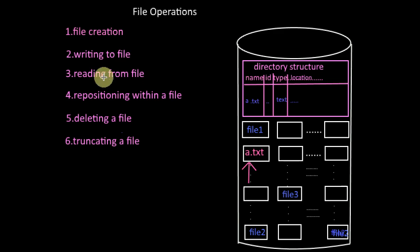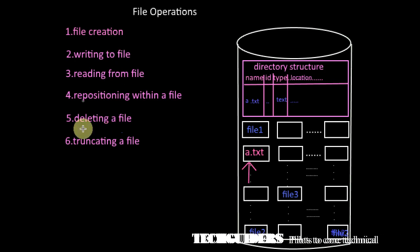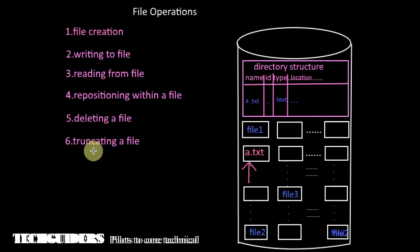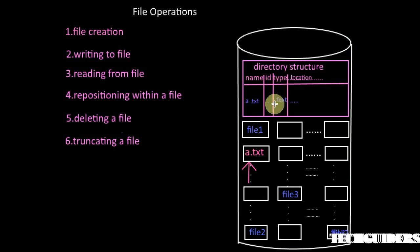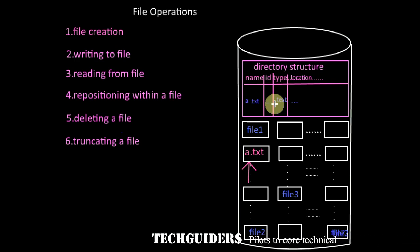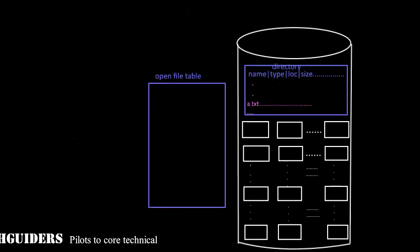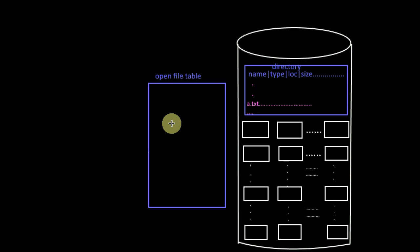In the last video we saw the basic file attributes and the basic file operations. Any activity on the file is either one of these basic operations or a combination of them. But most of these operations require a search in the directory structure with the specified file name. To avoid this constant searching in the directory which resides on the disk, the operating system maintains a small table called the open file table.